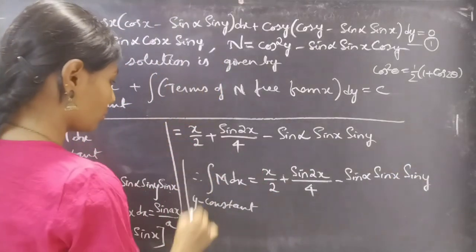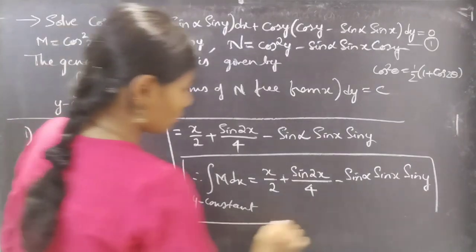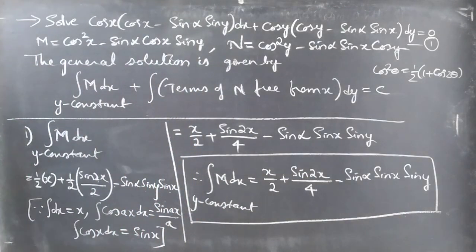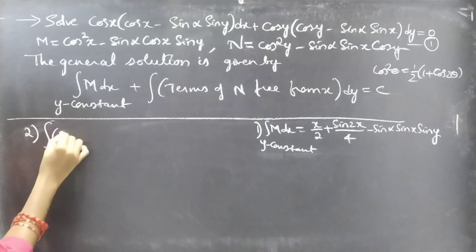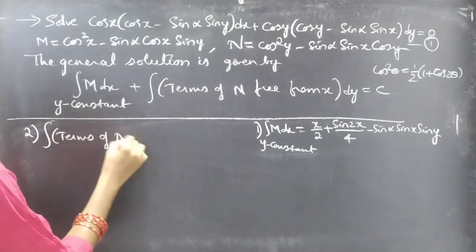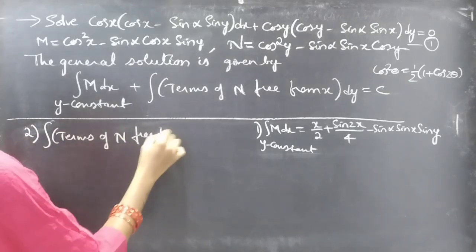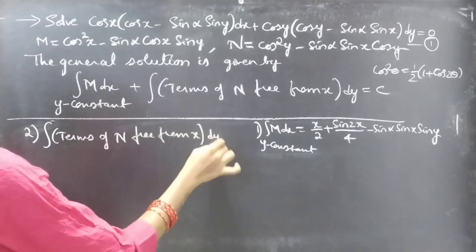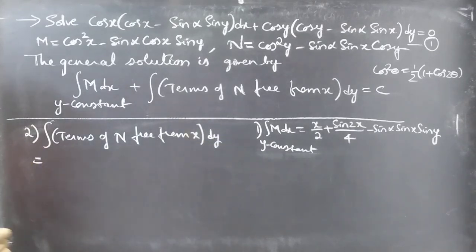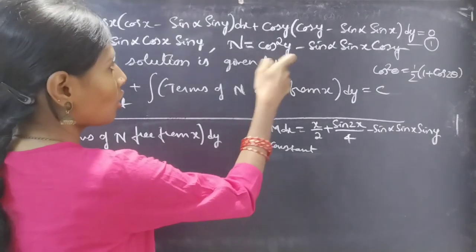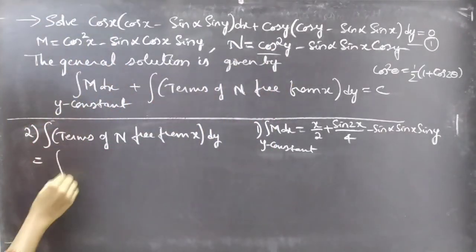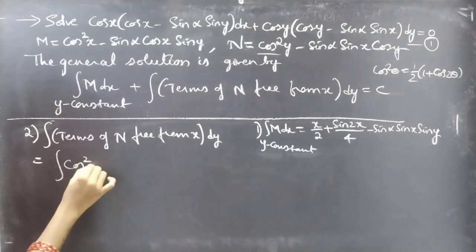Now let's find the second integral: the integral of terms of N free from x, with respect to dy. Observing N, the term which is free from x is cos²(y), so we need to integrate cos²(y) dy.